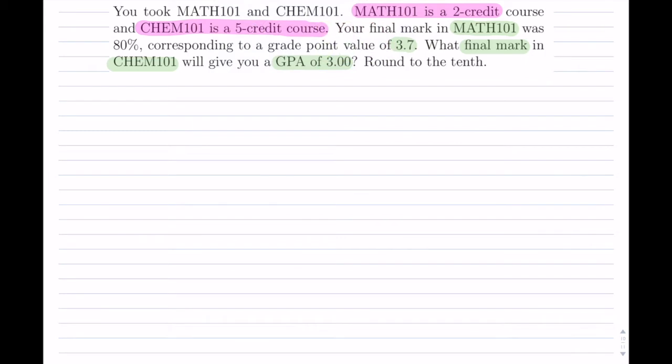So anytime you're facing a question with grade point averages or grades, I always list for myself all the different courses that are involved. So in this case, it's only math and chemistry. Now it may be more. And then what I need to know, I need to know two things. I need to know how many credits the course was. And in this case, math was two and chemistry was five. And the other thing I need to know is the grade.